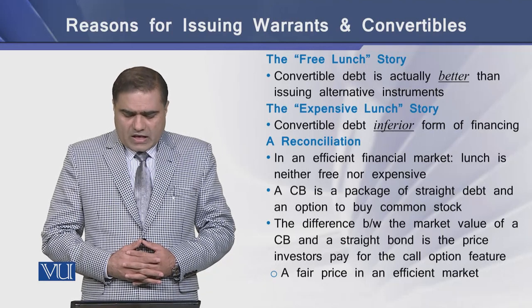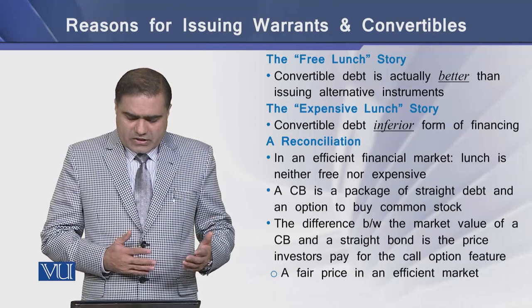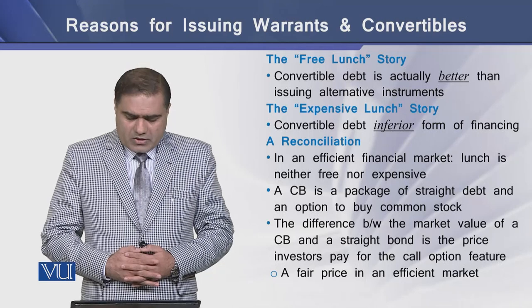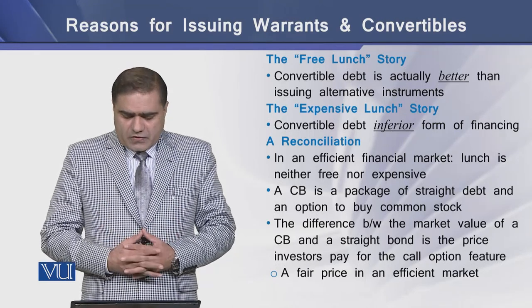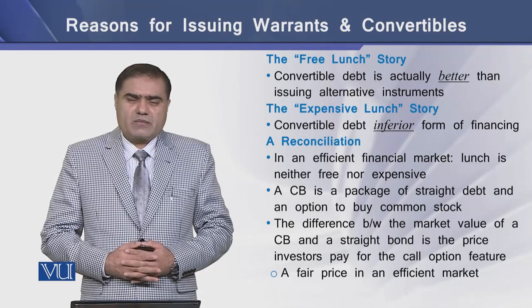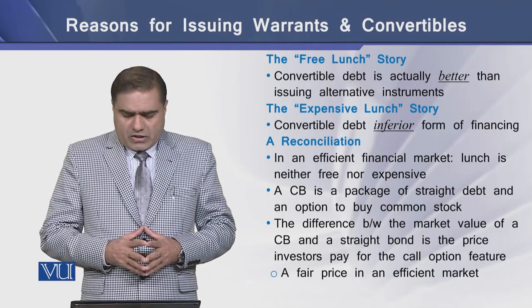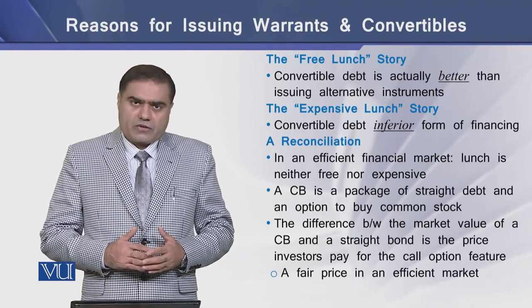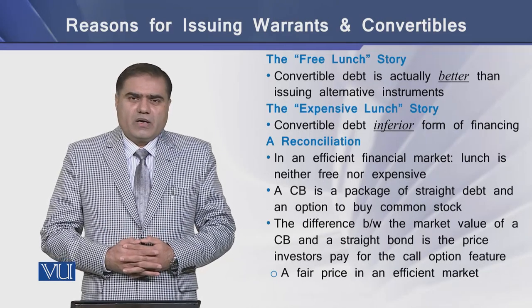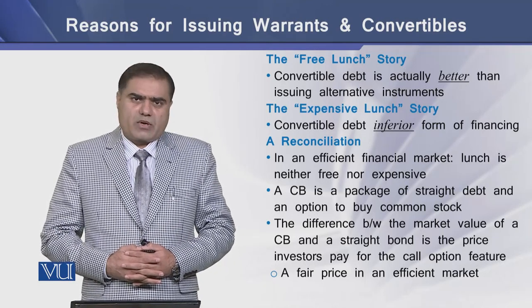A convertible bond is a package of two things: straight debt and an option to buy the underlying common stock. The difference between the market value of a convertible bond and a straight debt is the price that an investor pays for the call option feature built into the deal. This price is generally known as the fair market price in an efficient capital market.